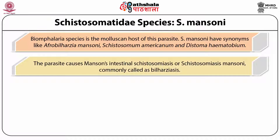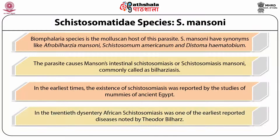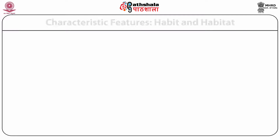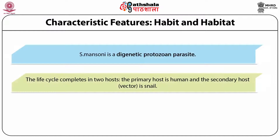The parasite causes Manson's intestinal cystosomiasis or Cystosomiasis mansoni, commonly called Bilharziasis. In earliest times, the existence of Cystosomiasis was reported by studies of mummies of ancient Egypt. In the 20th century, African Cystosomiasis was one of the earliest reported diseases noted by Theodore Bilharz.